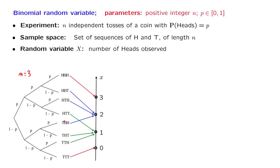So for example, if the outcome happens to be this one, tails, heads, heads, we have two heads that are observed, and the numerical value of our random variable is equal to 2.